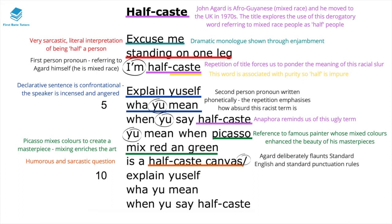Agard deliberately flaunts standard English and standard punctuation rules in this poem. In many ways, he writes the way he would speak in the Caribbean — this is a direct reference to the Creole dialect, which now influences spoken English in the Caribbean.